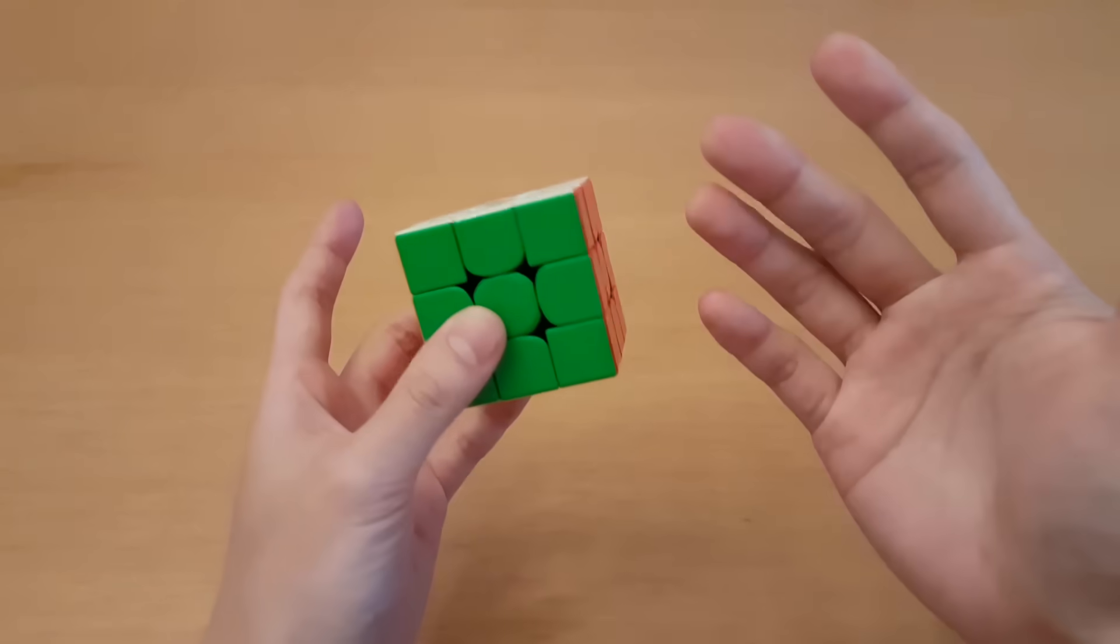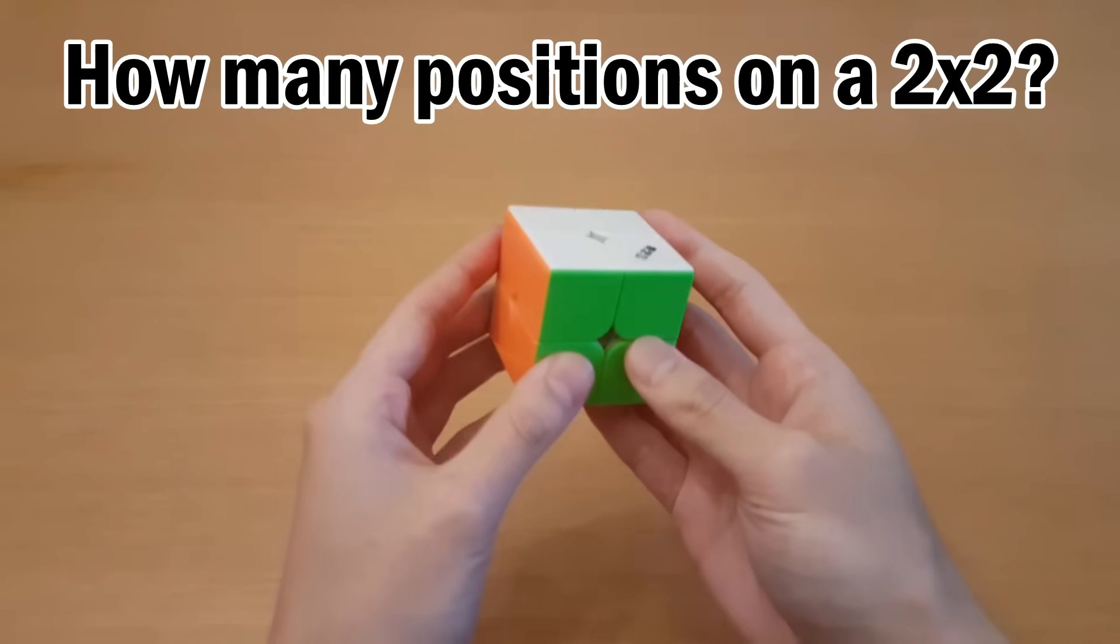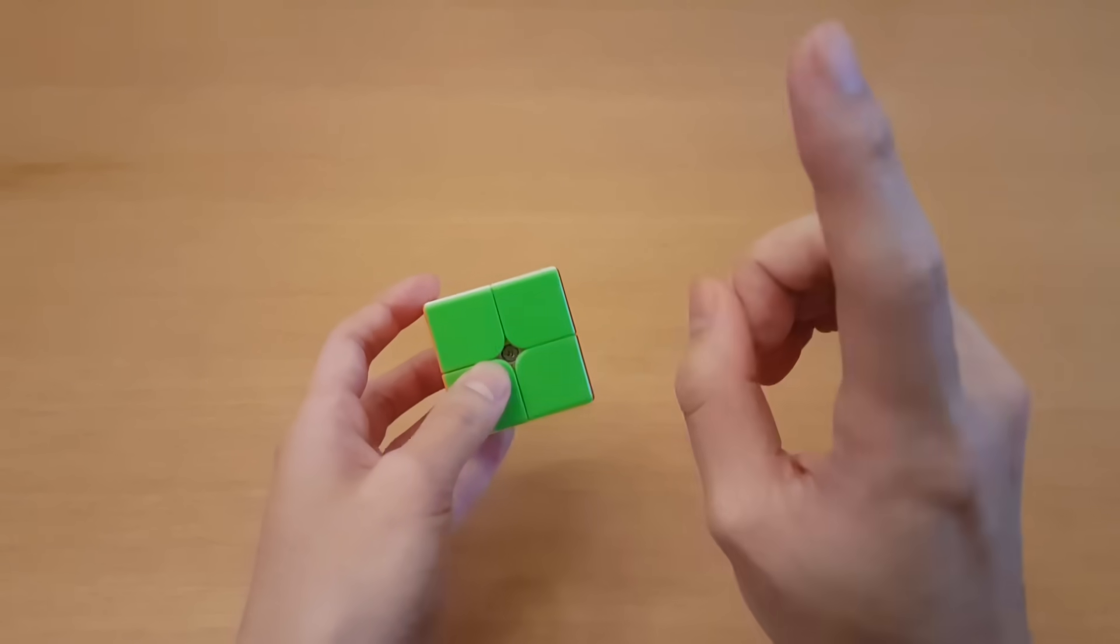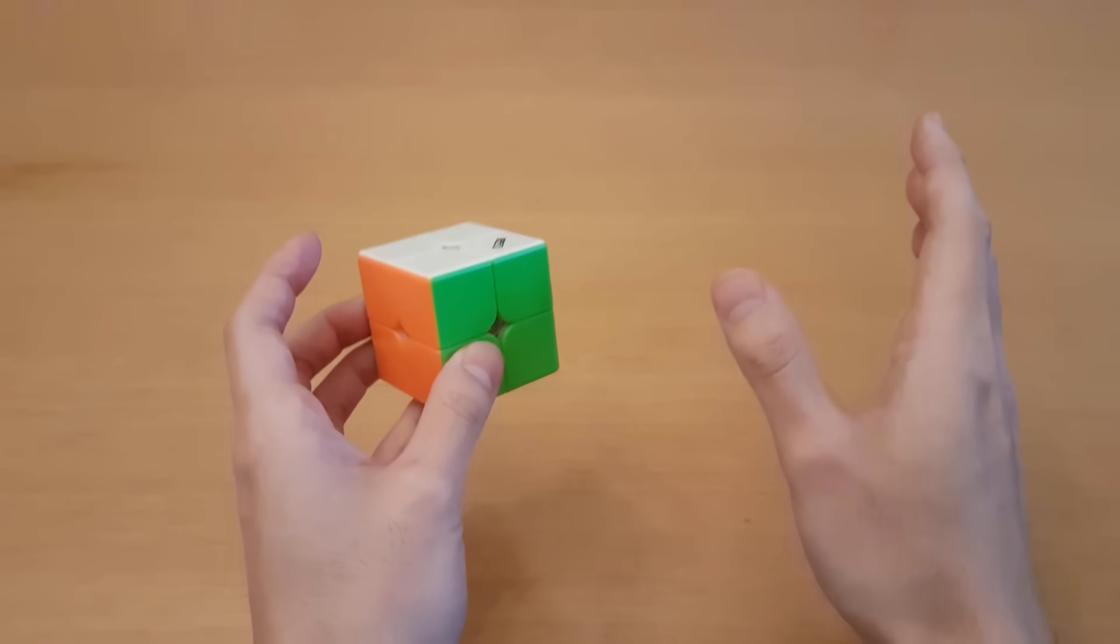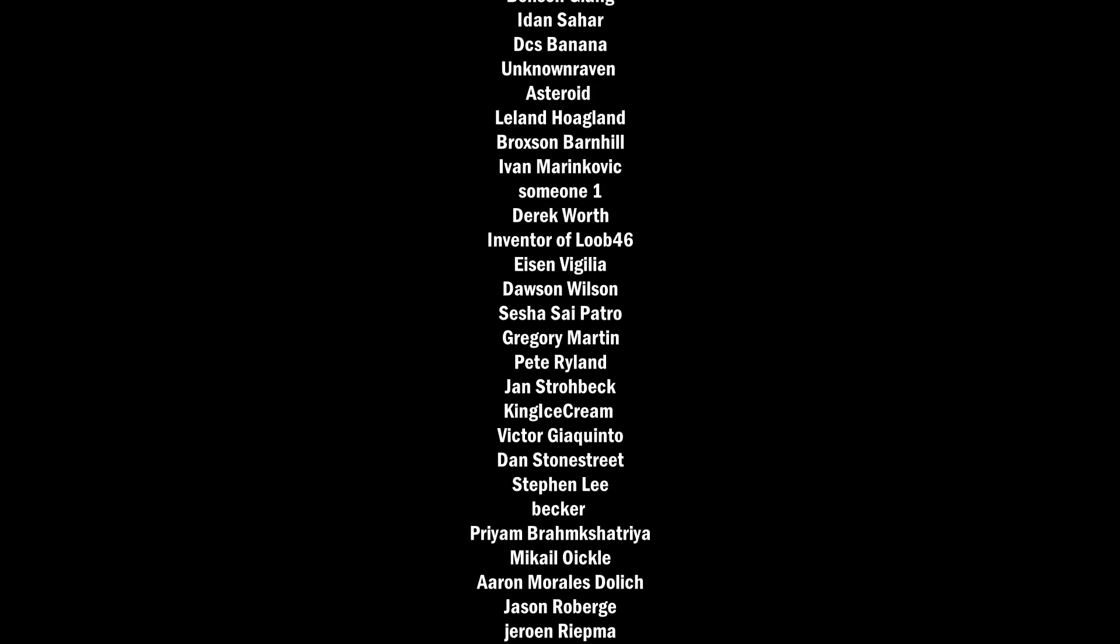So that's it for 3x3, but I have a challenge for you guys. How many positions are there on a 2x2? Now you might think this is easy. Just grab the part on my 3x3 calculation that is just for corners and you're done. But nope, that's not the right answer and it's trickier than that. So see if you can get the number and explain to me in the comments why that is. Thanks for watching and I'll see you guys next time.